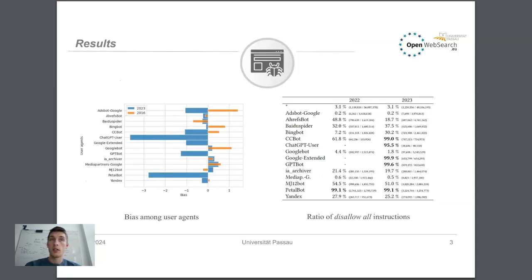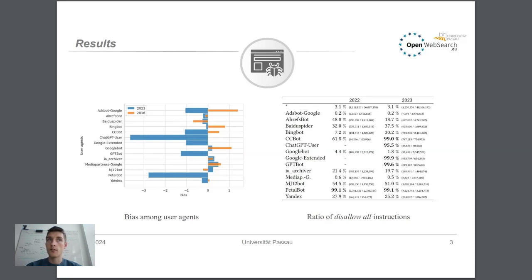Some of the key findings were that the user agents disallowed in robots.txt files revealed a clear stance against crawlers feeding AI models — for example the GPT bot — as well as regarding the annotation of license information.